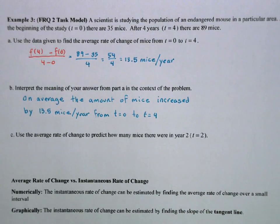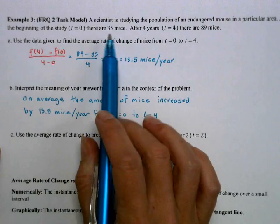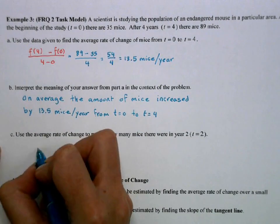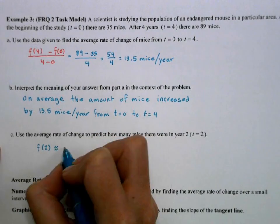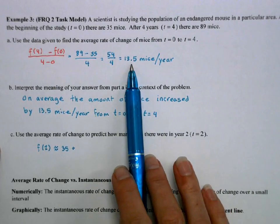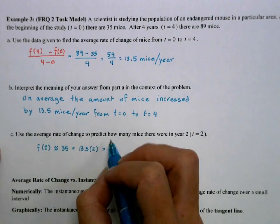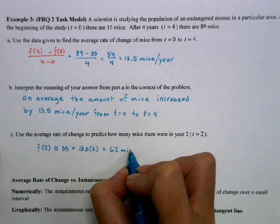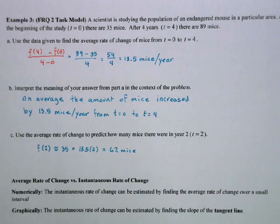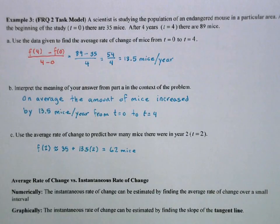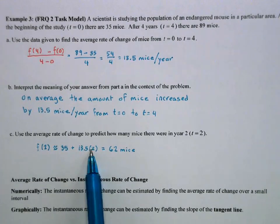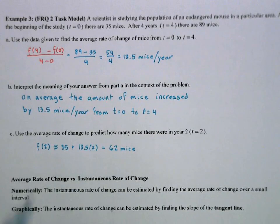The other thing you may be asked to do is to use the average rate of change to predict how many there were in year 2. Well, different ways to do this. In year 0, we had 35 mice. I'm going to say f of 2 is approximately 35, and then we're increasing on average 13.5 per year. We're doing this for two years, so I'm going to say 13.5 times 2. So my model predicts that there was possibly 62 mice. It makes sense that it's somewhere in between 35 and 89. Is that exact? No, we don't know, but it's a good prediction. We could also predict t equals 6. We just need to add however many years from one of our known values.